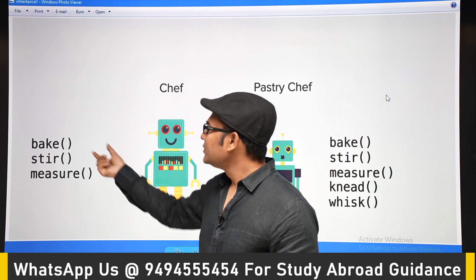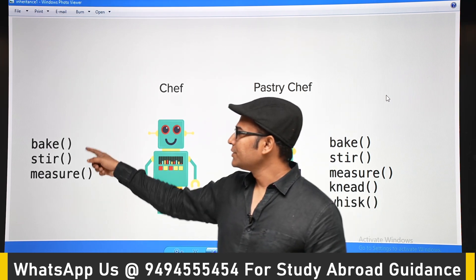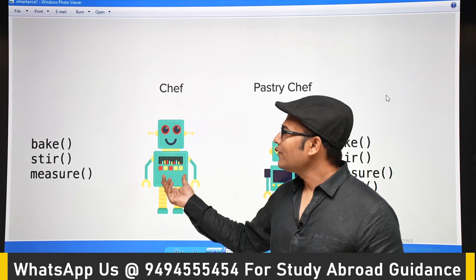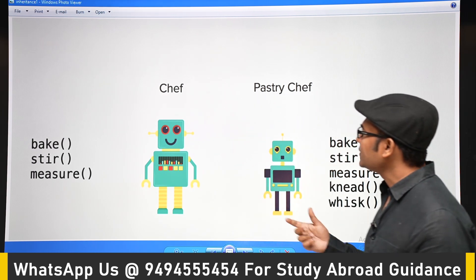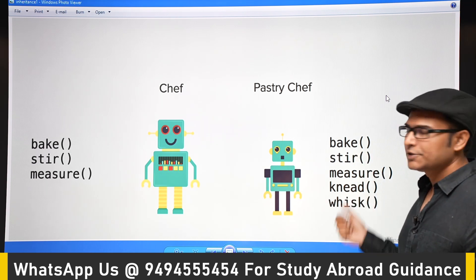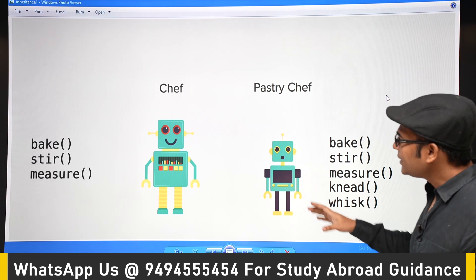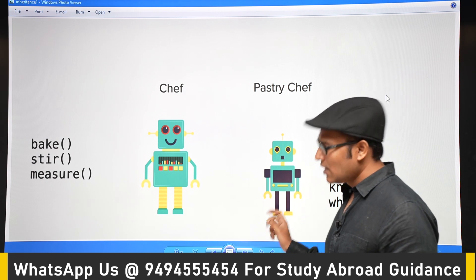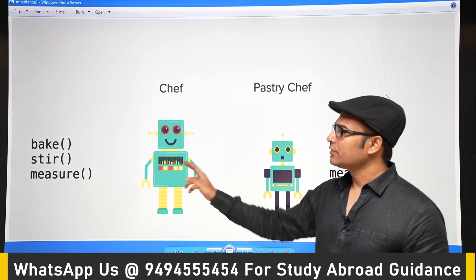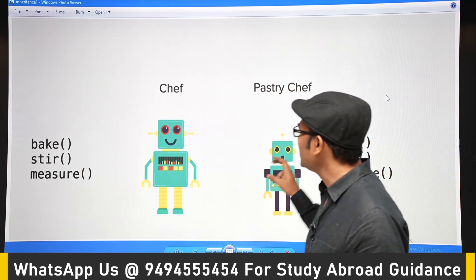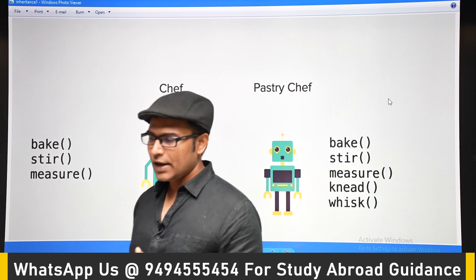Let's say there is a Chef class that has three methods: bake, stew, and measure. Now you need to make one more class called PastryChef, which also has those three methods plus two additional ones. Instead of writing all that code again for PastryChef, you can say PastryChef inherits Chef, and automatically all three methods will be inherited by PastryChef.